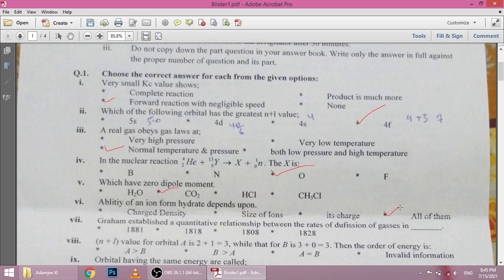Seventh is Graham established a quantitative relationship between the rates of diffusion of gases. This doesn't come in paper, we don't need to find it.